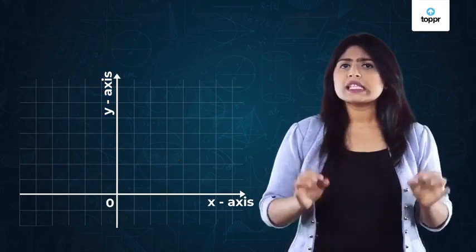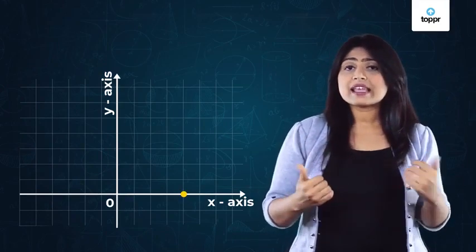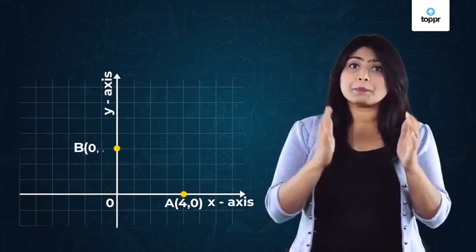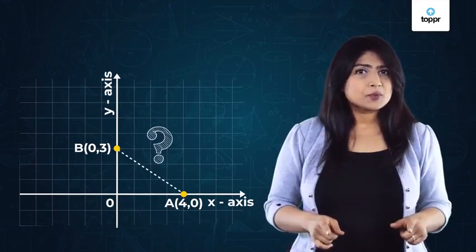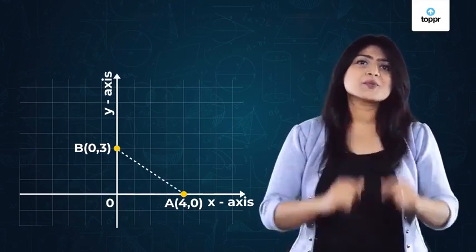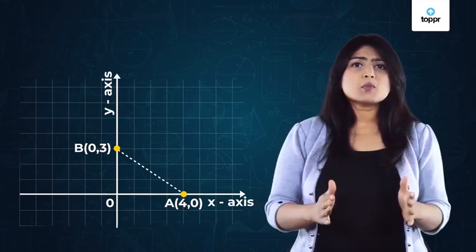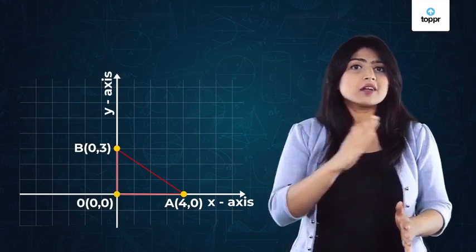Now, suppose these two points were respectively on the x axis, say at A(4,0), and on the y axis at B(0,3). Can we still find the distance between them? Yes, we can. If we observe carefully, these points form a right triangle with origin as the third point.